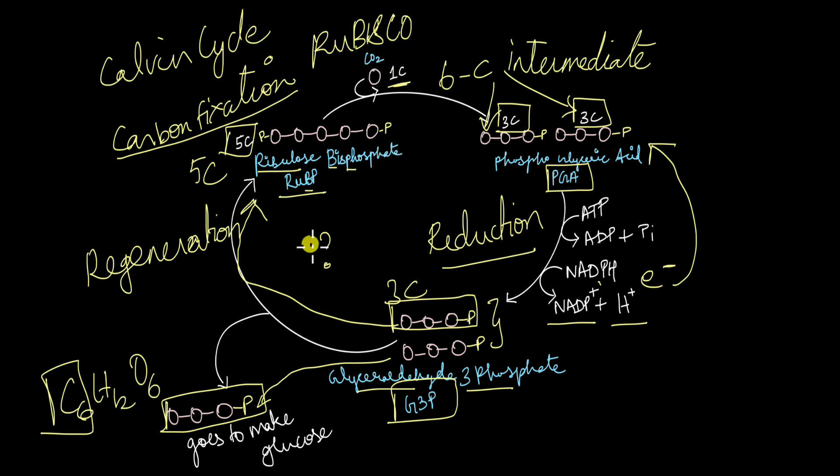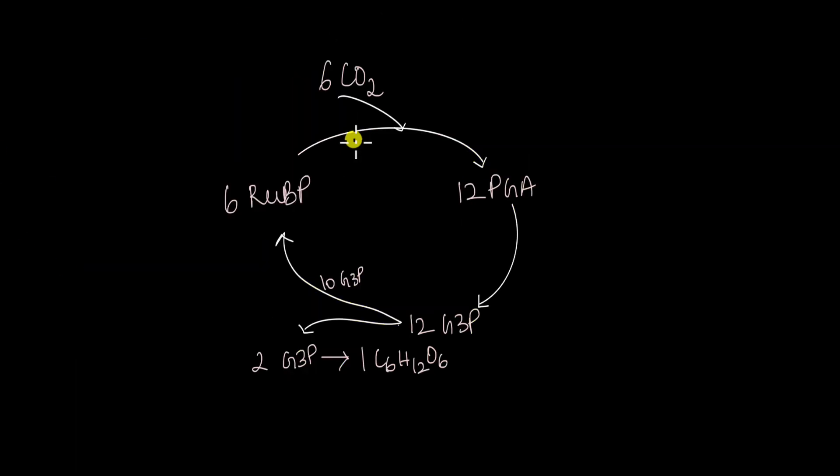What happens is this entire Calvin cycle occurs six times inside each plant. For one glucose to be produced, this cycle turns six times. So at the end, you have six carbon dioxide molecules entering the cycle. And what a balanced reaction looks like is something like this.